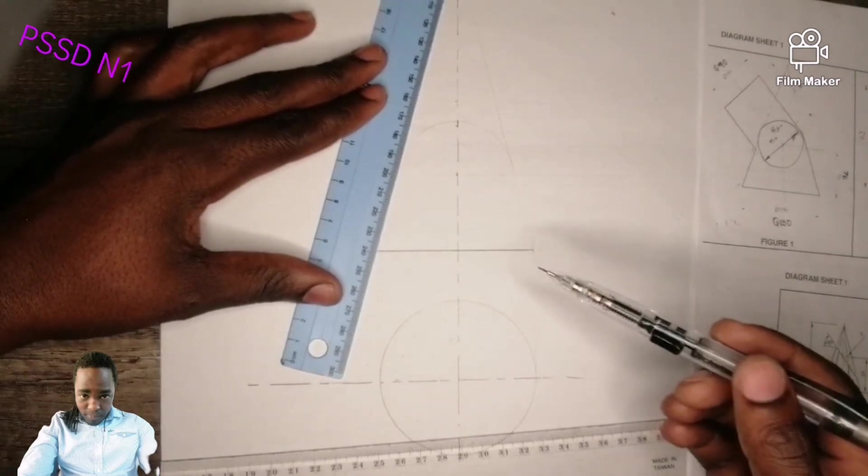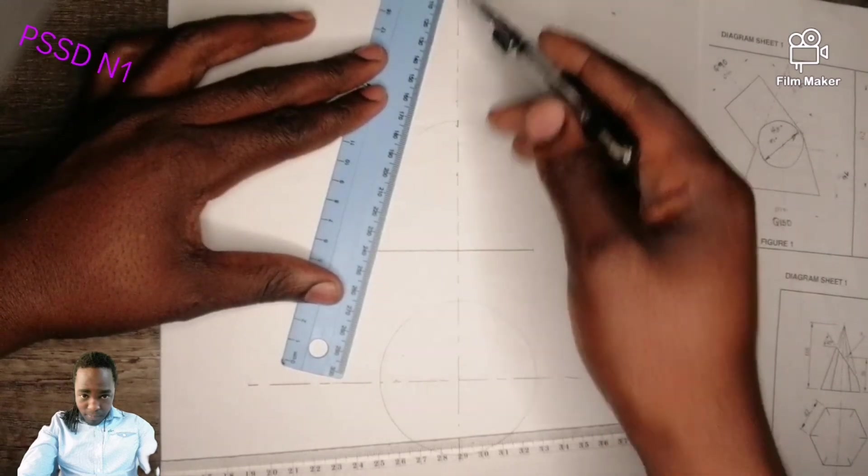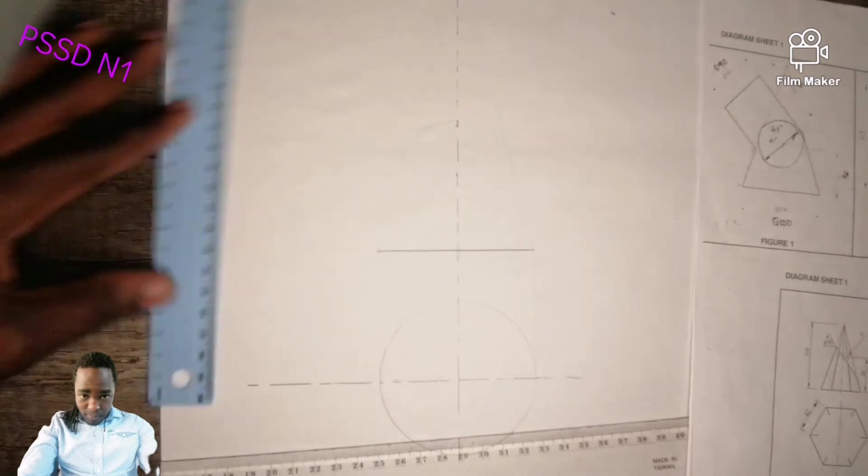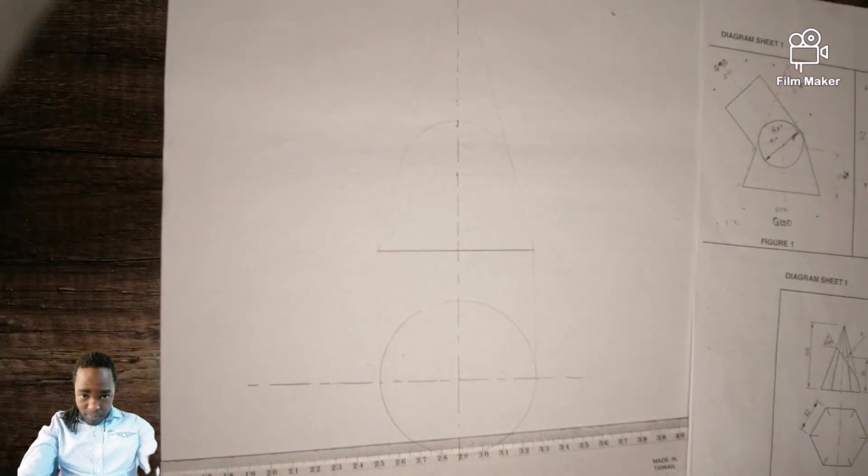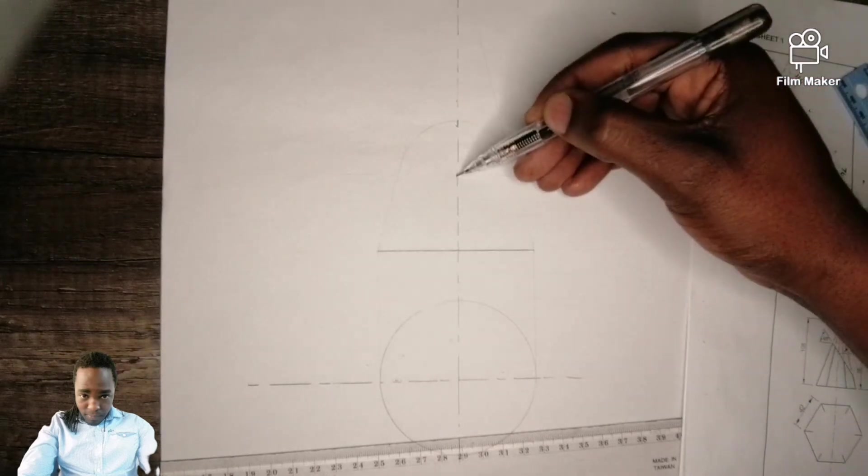From there, what is happening? From this point you can put a 45 degrees. You can even draw it dark. Remember it's a centerline, which is this one.